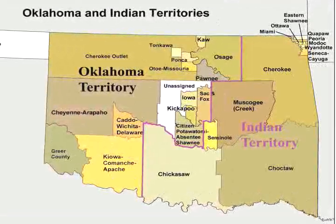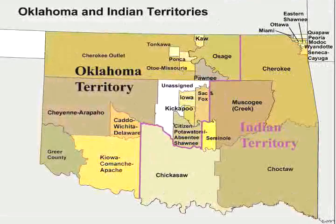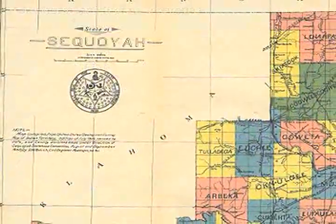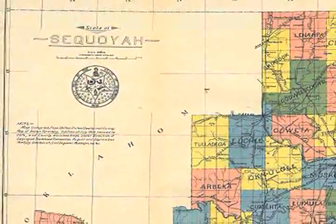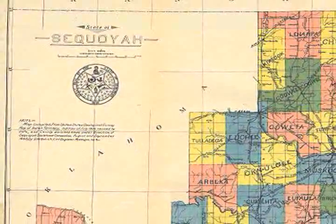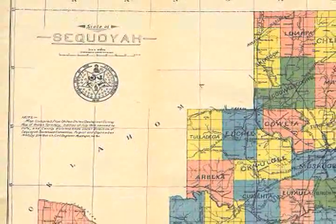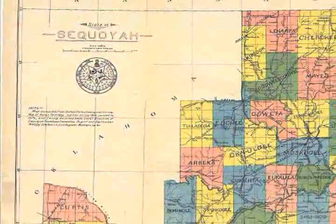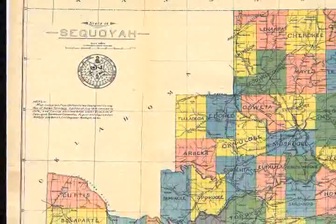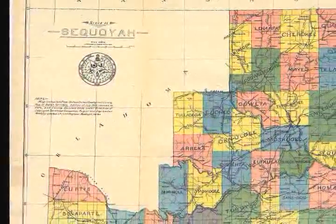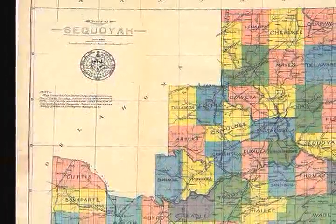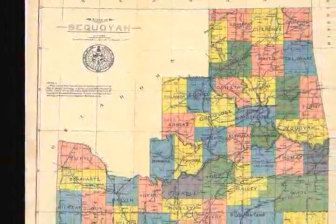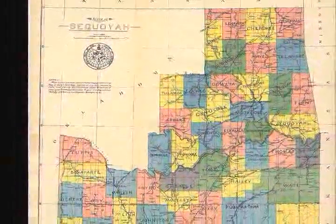For a variety of reasons, a group of Indian Territory residents began advocating the creation of two separate states based on the already two separate territories. Advocates of the two separate states began working on the details necessary to create the proposed state of Sequoyah — Indian Territory, basically the eastern half of what is today Oklahoma.